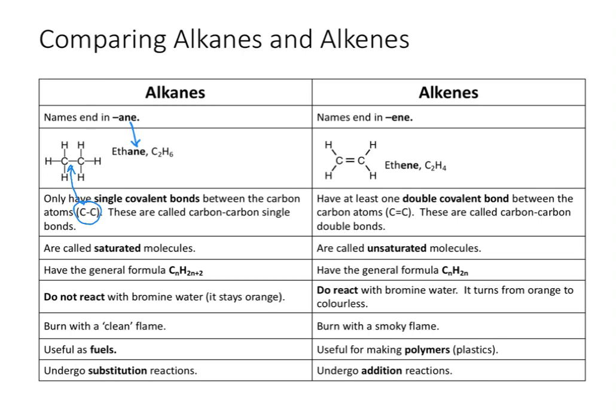If there's only one line between the carbon atoms, we call it a single bond and say it is an alkane. These are also called carbon-carbon single bonds — 'carbon-carbon' just refers to the bond being between two carbon atoms. We also call this a saturated molecule. If there are only single bonds — one line, one bond — between the carbon atoms, it's a saturated molecule.